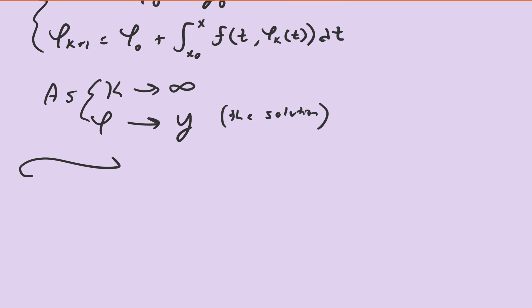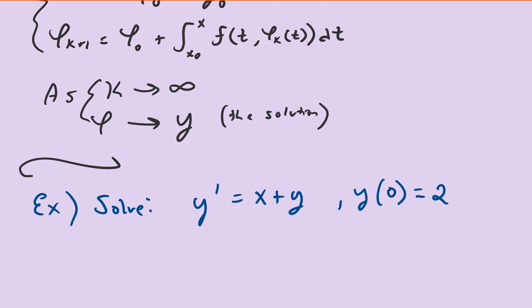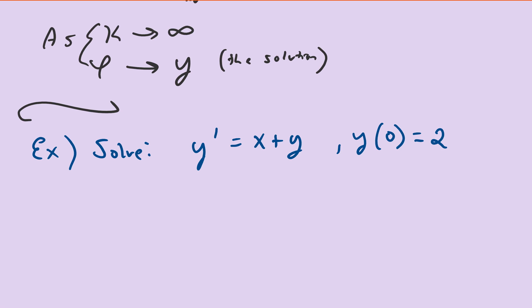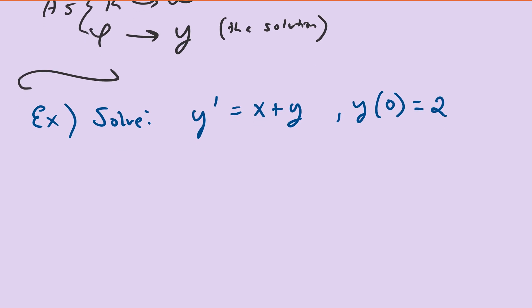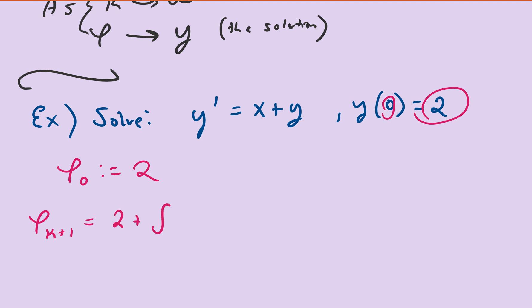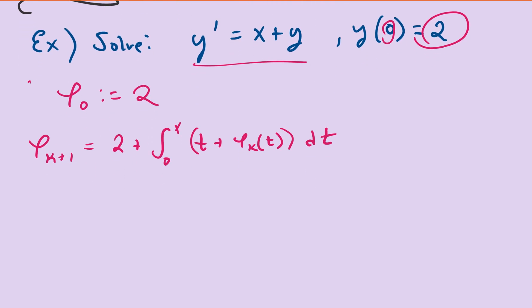Let me illustrate how this method works. We'll solve y prime equals x plus y with y of 0 equal to 2. We've discussed how to solve these equations before, but let's assume you don't know the method or don't want to go through that process. So we define φ₀ equal to 2, the initial condition, and φ_{k+1} of x equals 2 plus the integral from 0 to x of t plus φ_k of t dt.